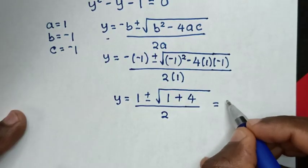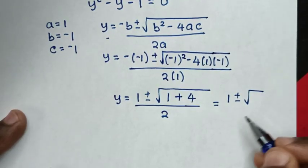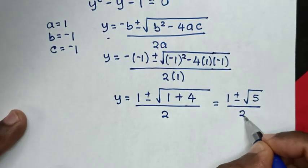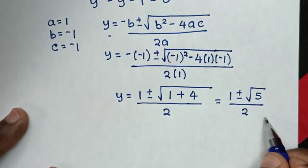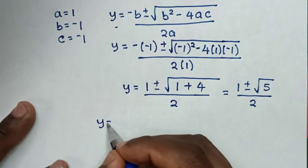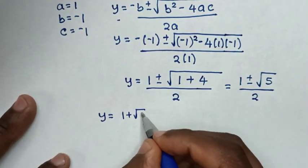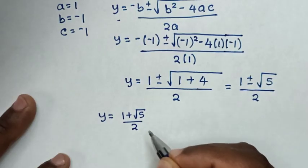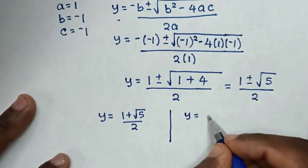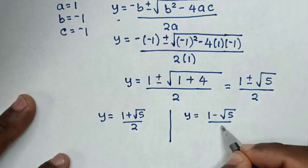This simplifies to y equals (1 plus or minus square root of 5) over 2. So we have two solutions: y equals (1 + √5) / 2 and y equals (1 − √5) / 2.